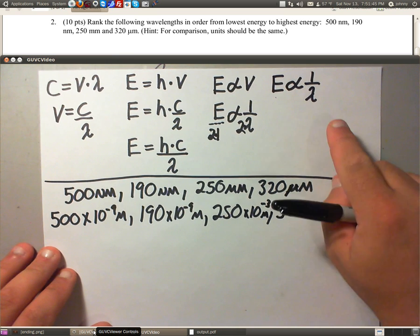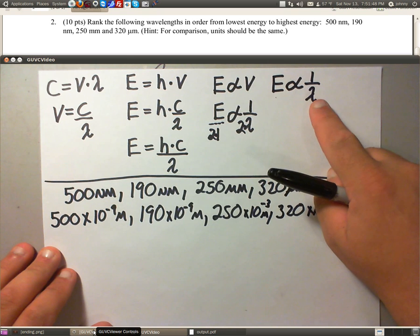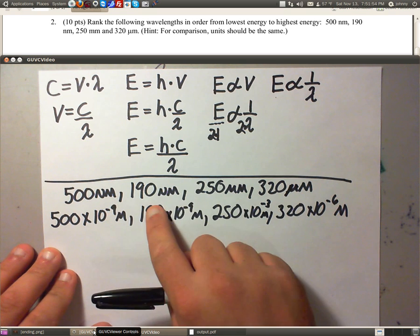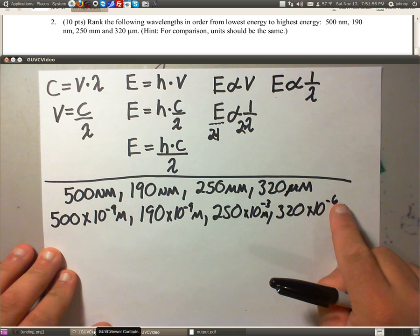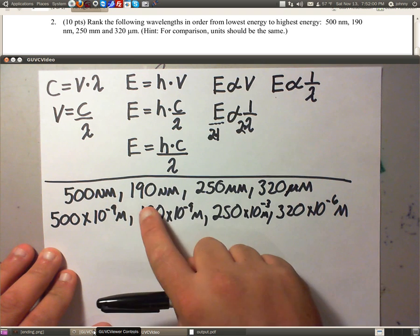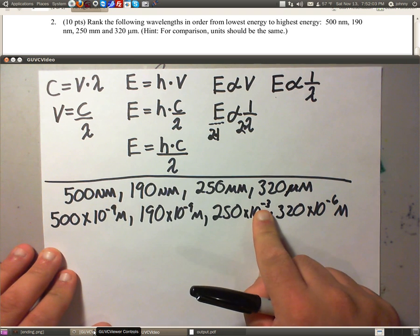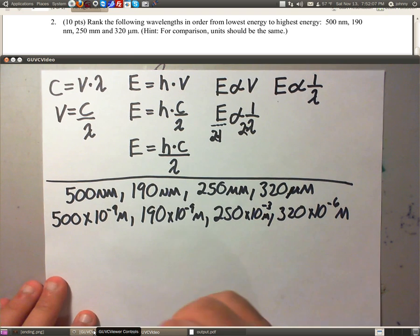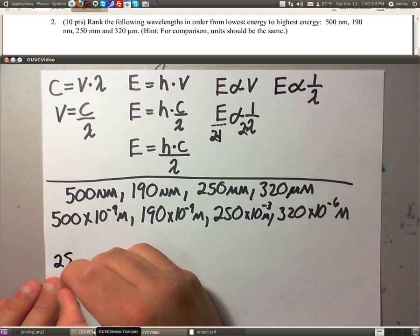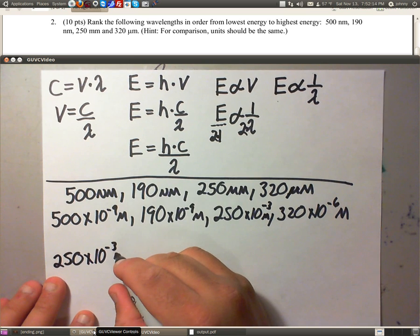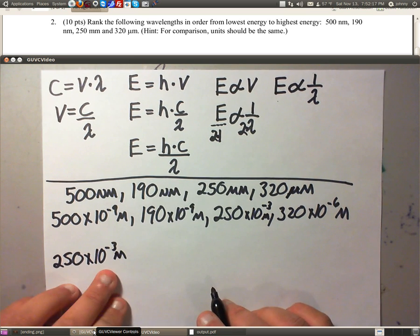Now, remember, we're looking for the one that has the largest wavelength first, because it wants the lowest energy. Out of these, the largest wavelength is going to be basically the largest number. And all these are negative exponents. Well, this is the one that has negative 3. Negative 3 is my largest number. So the 250 times 10 to the negative 3 meters is my largest one.